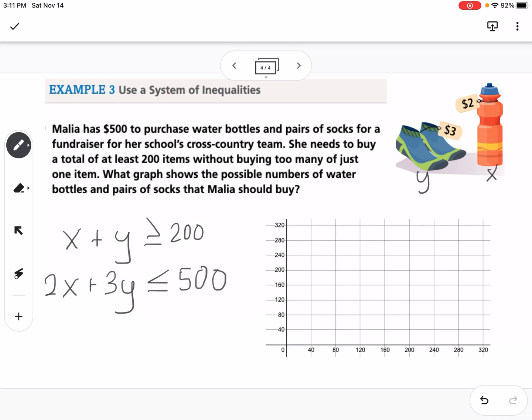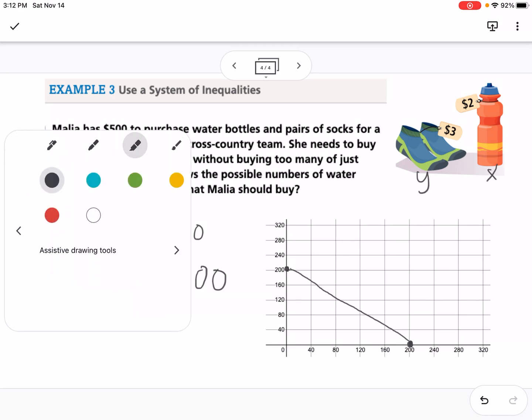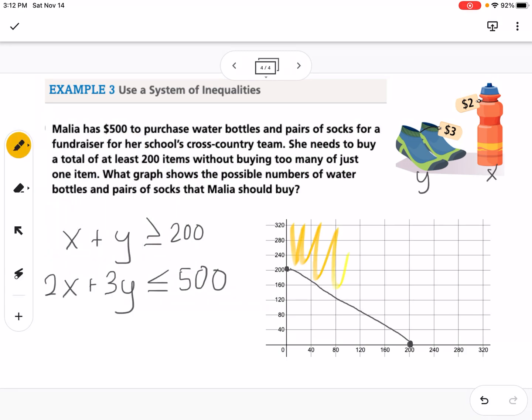Now we're going to use our cover-up method. We know for the top one that both intercepts are going to be at 200, so I'm going to put a dot at 200 and a dot at 200, and I'm going to connect those. That would be my first line. If I plug in 0,0, we don't shade 0,0 on that one, so that means that I would shade above that line.